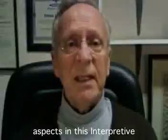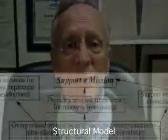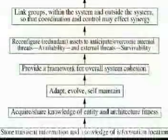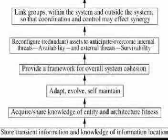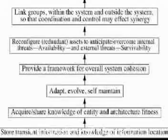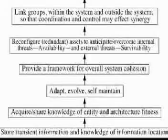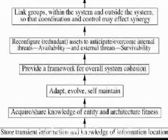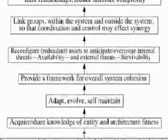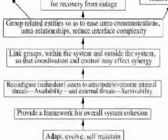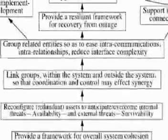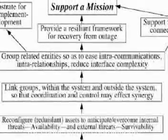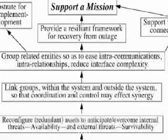We can interrelate these many aspects in this interpretive structural model. Starting at the bottom, systems architecture is a repository of information about itself and its fitness, a framework for adaptation, evolution, and self-maintenance, and a framework for overall system cohesion. It is reconfigurable to overcome internal failures, availability, and external threats, security, and survivability, and to provide the essential linkages for cooperation, coordination, control, and protection.